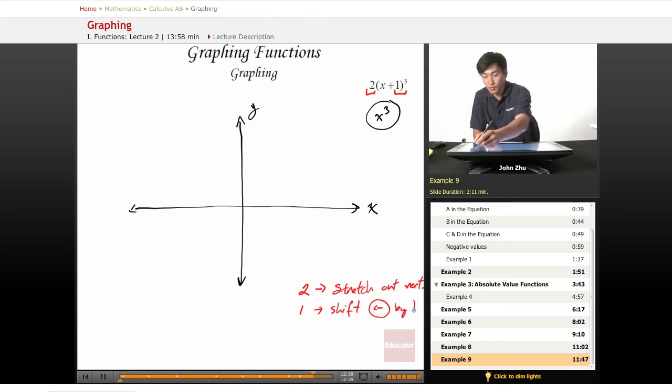So if we mark those points, here's 1. We shift the x cubed graph over by 1, and we also stretch it by 2.